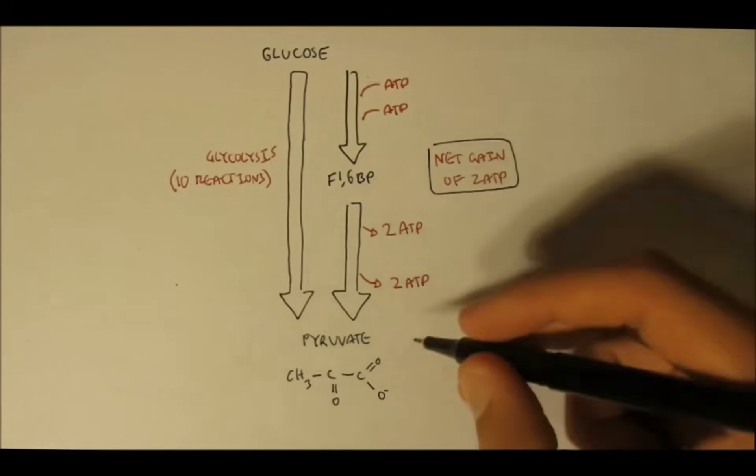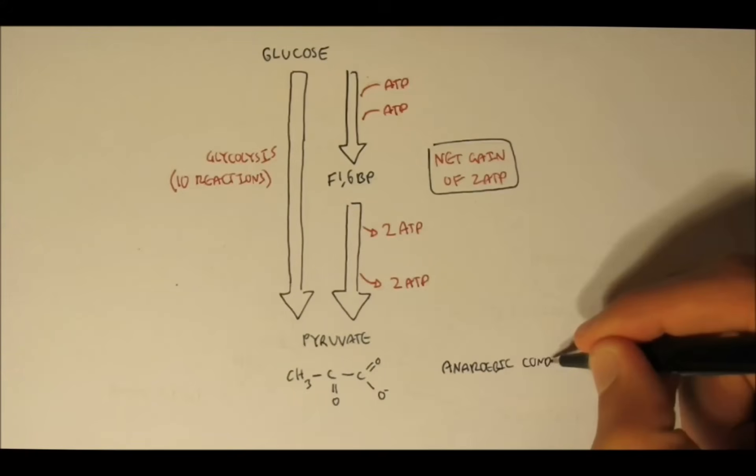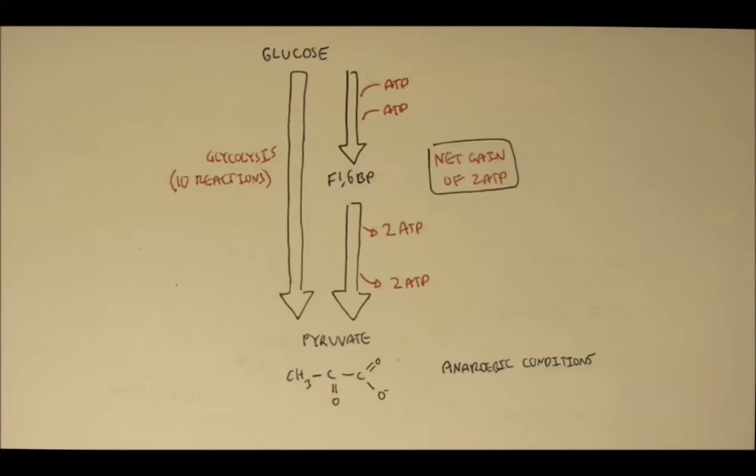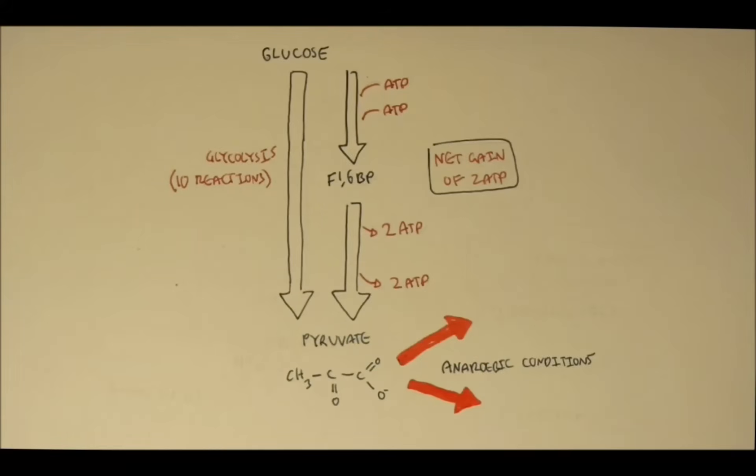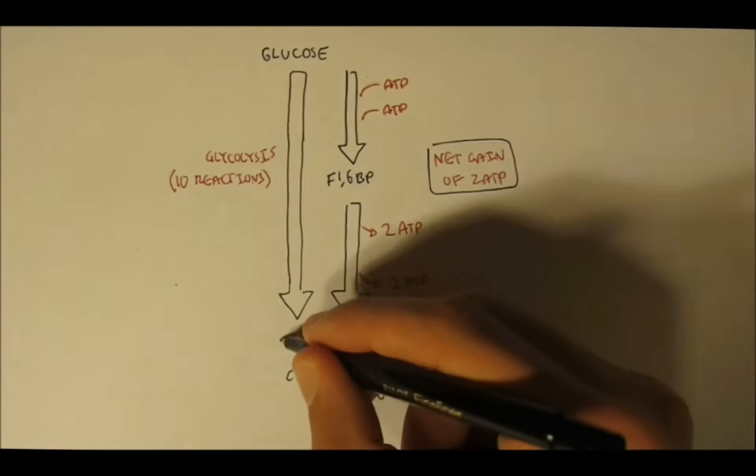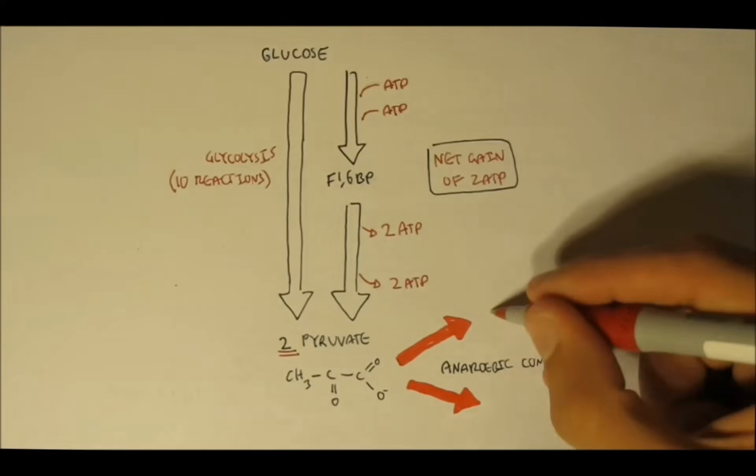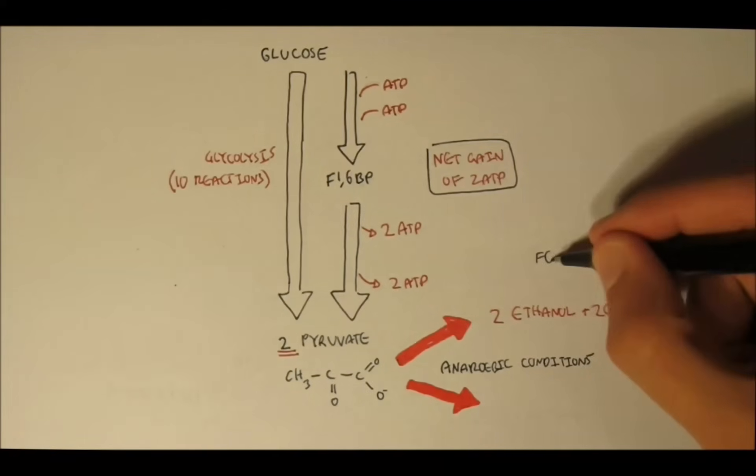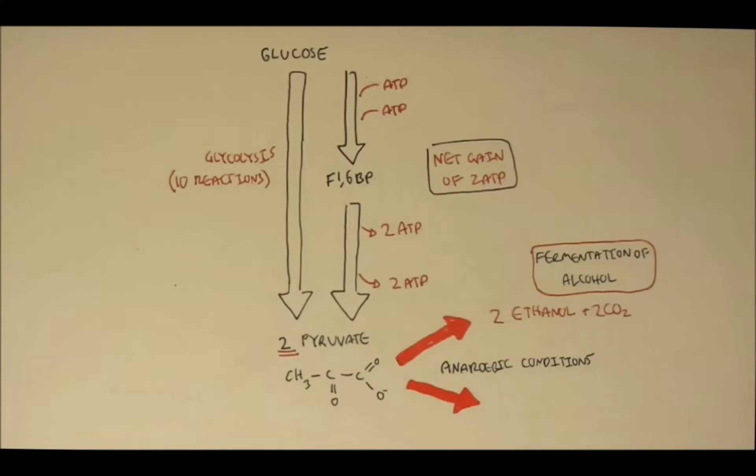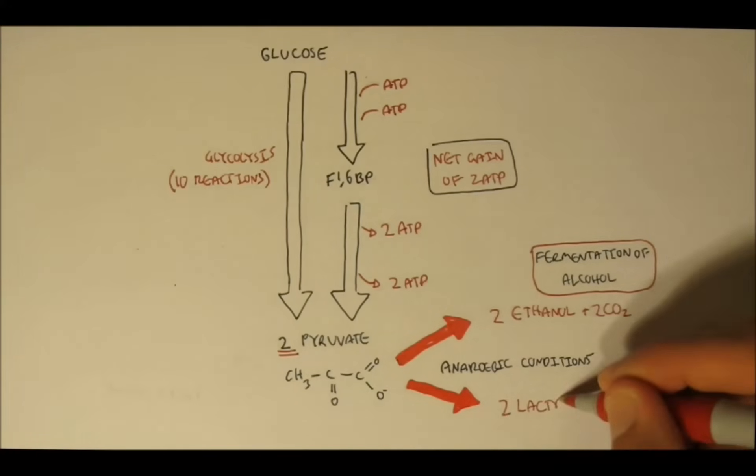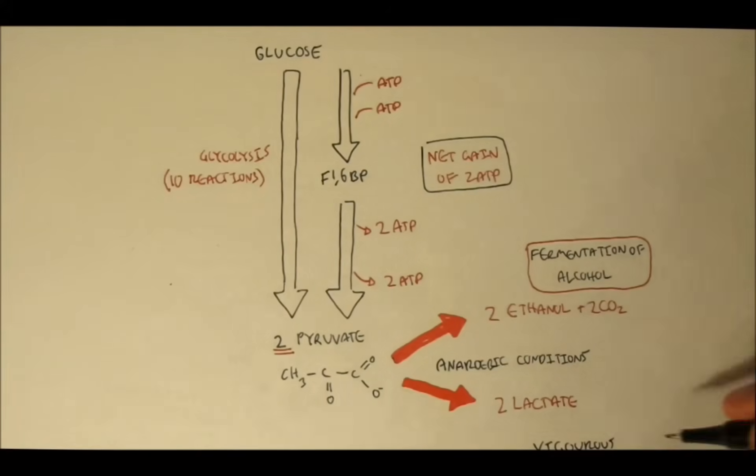Now, the 2 pyruvates then have a number of fates from glycolysis. In anaerobic conditions, or without oxygen, it can enter 2 things and become 2 things. One of which, 2 pyruvates, can become 2 ethanols and 2 carbon dioxides. And this is during alcohol fermentation to make wine or whatnot. Or, alternatively, the 2 pyruvates can produce 2 lactates, which is a by-product of muscle when using glycolysis for energy and occurs when exercising vigorously.